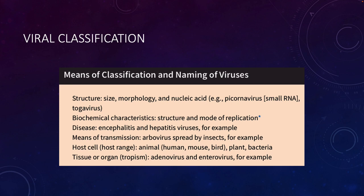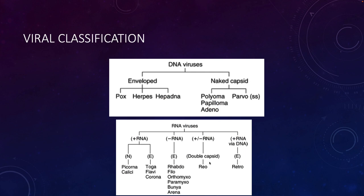Viruses are named and classified based on structure — including size, morphology, and nucleic acids — their biochemical characteristics, the diseases they cause (like encephalitis or hepatitis), means of transmission (arboviruses are spread by insects), host cell range — whether they infect animals, plants, or bacteria — and tissue or organ tropism. For example, adenoviruses were first identified in adenoid cell tissue, and enteroviruses generally infect the GI tract.